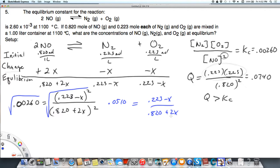And we end up with 0.0510 equals the square root here and then 0.820 plus 2X on the bottom. Okay, go ahead and distribute, and X equals 0.164 molar after I solve for X.